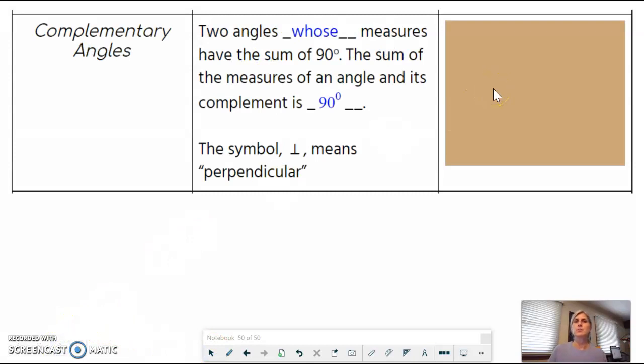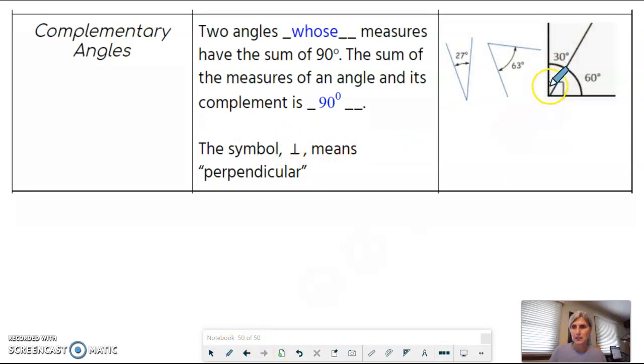Complementary angles. Two angles whose measures have the sum of 90 degrees. The sum of the measures of an angle and its complement is 90. The symbol upside down T means perpendicular. Also, when you see a box in an angle, that indicates 90 degrees. So you can see the two angles here. This is a non-adjacent pair, but they're two separate angles. They add up 27 plus 63 to 90 and 30 plus 60.